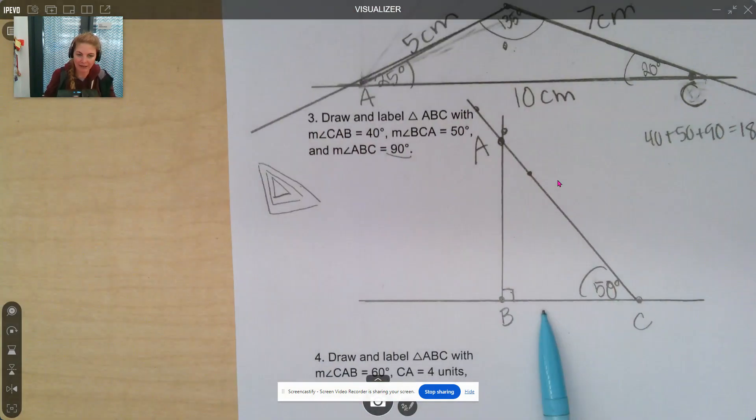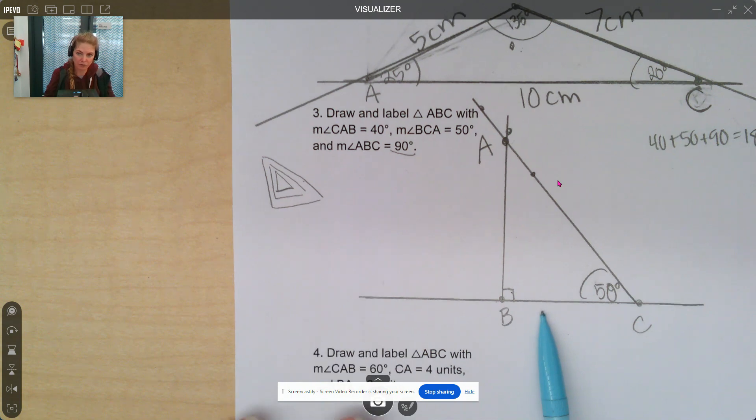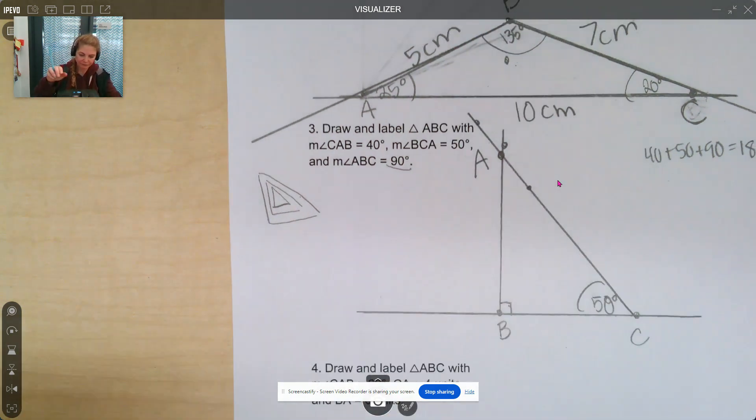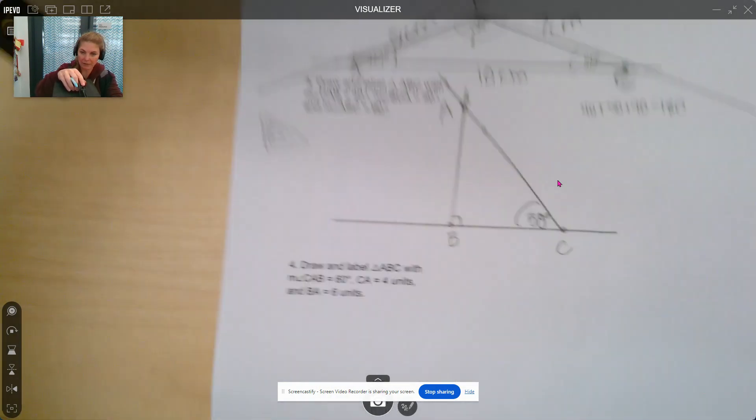So you can tell that when they give us angles, it's a little more accurate when we're drawing versus when we have to guess where our sides are. Okay, let's look at number four.